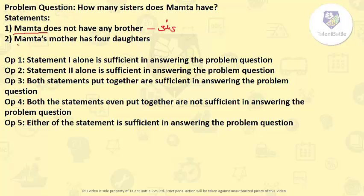Considering the second statement: Mamta's mother has four daughters. This means Mamta has three sisters, since Mamta herself is the fourth daughter. So only the second statement is sufficient to answer the question, because the first only tells us she has no brother, while the second tells us all the daughters her mother has — that is four. The answer is that only the second statement alone is sufficient.